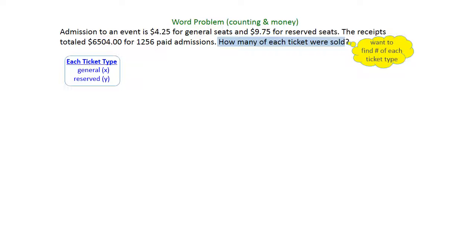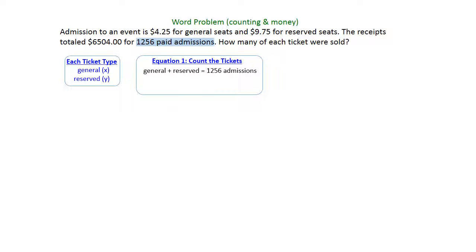The first thing we're going to do is write the equation for the tickets. We can count that there were 1,256 paid admissions, so we're going to count those tickets. The general tickets plus the reserved all together give you that 1,256. So that's just a matter of x plus y equals 1,256.